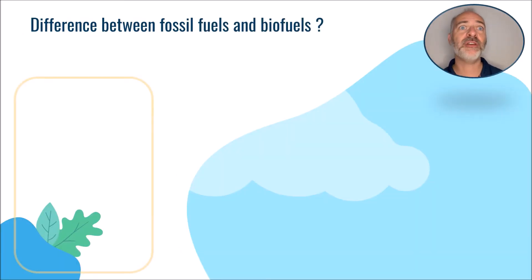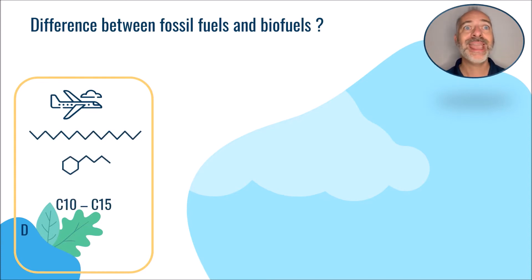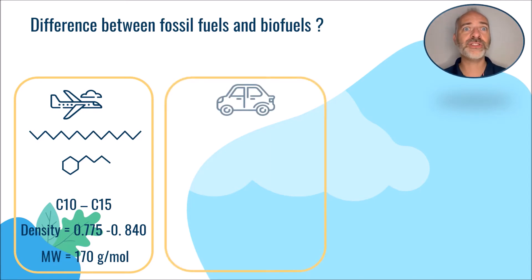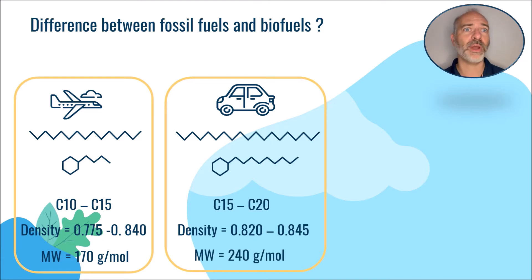We see here that fossil kerosene is composed of hydrocarbon chains of 10 to 15 carbon atoms. Its density is mentioned here and a typical molecular weight of about 170 grams per mole is generally observed. Diesel fuel concentrates slightly larger molecules, typically 15 to 20 carbon atoms, with a density mentioned here and a typical molecular weight of about 240 grams per mole.